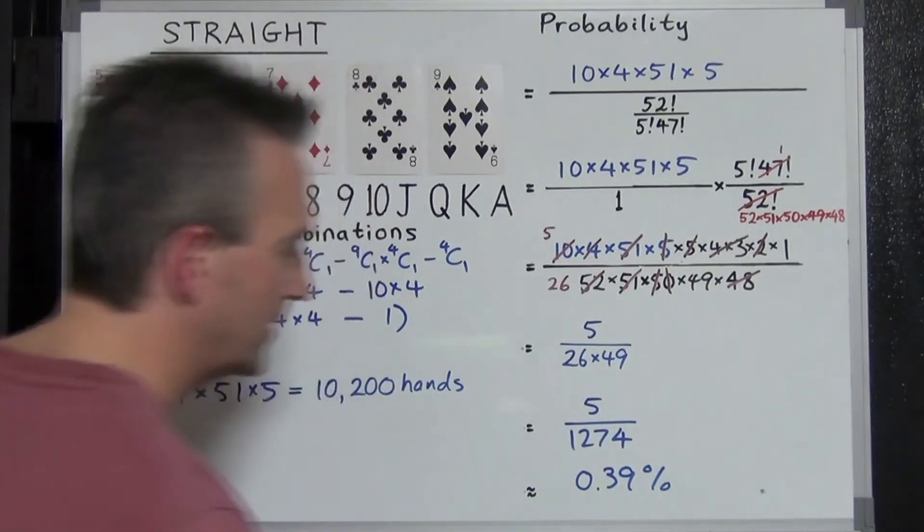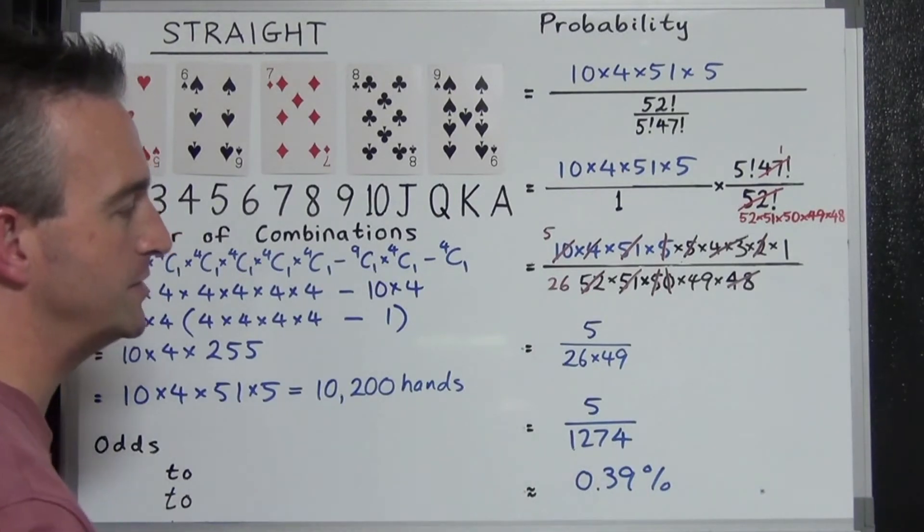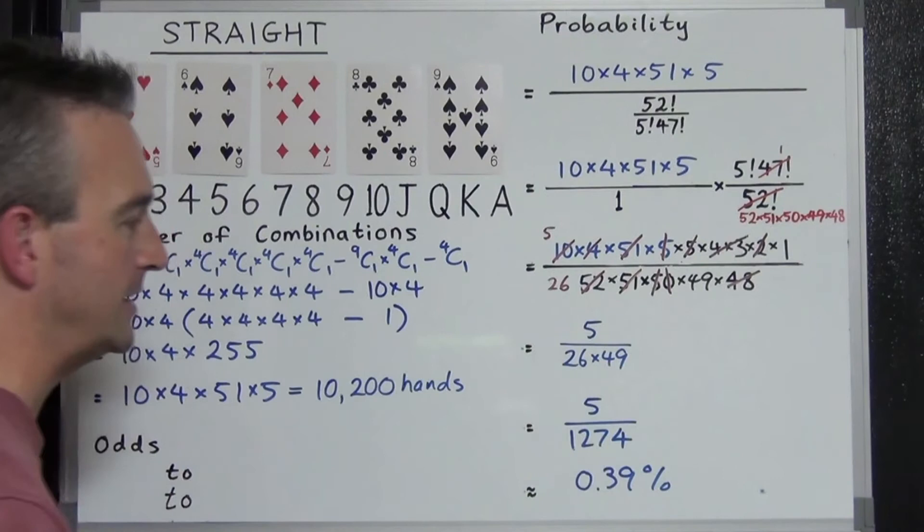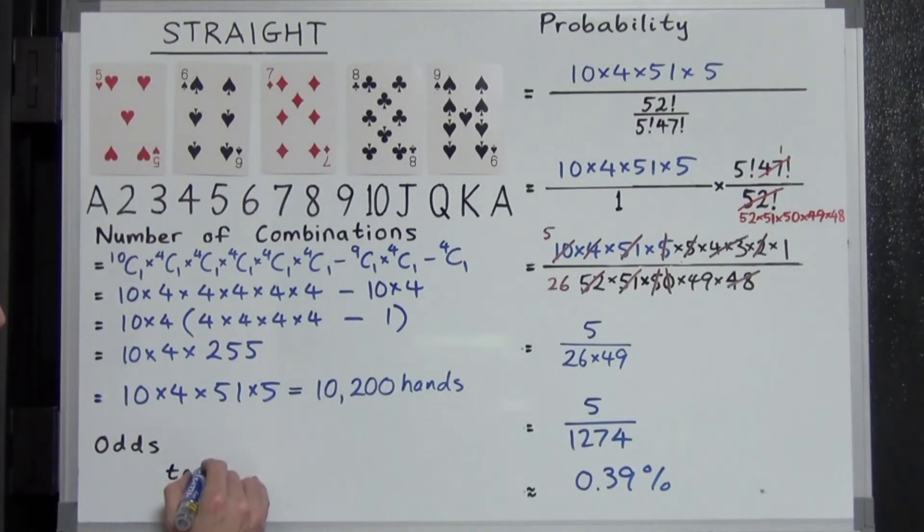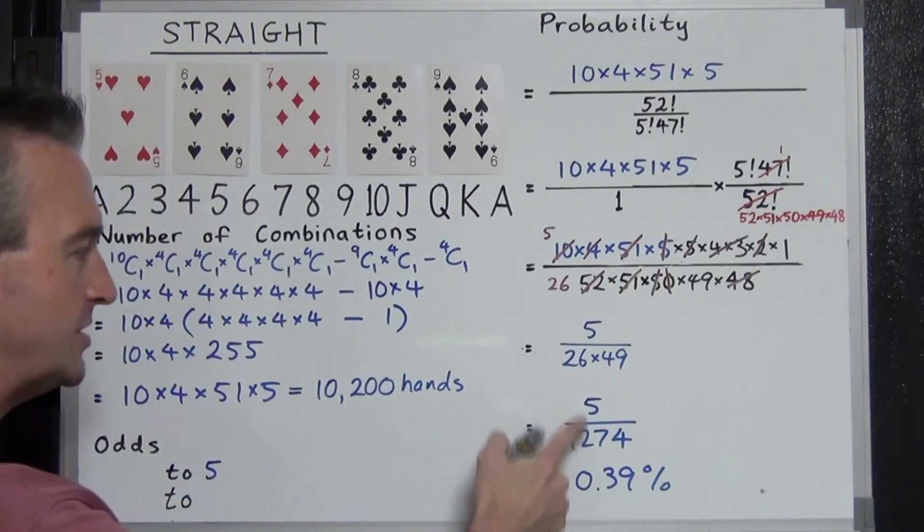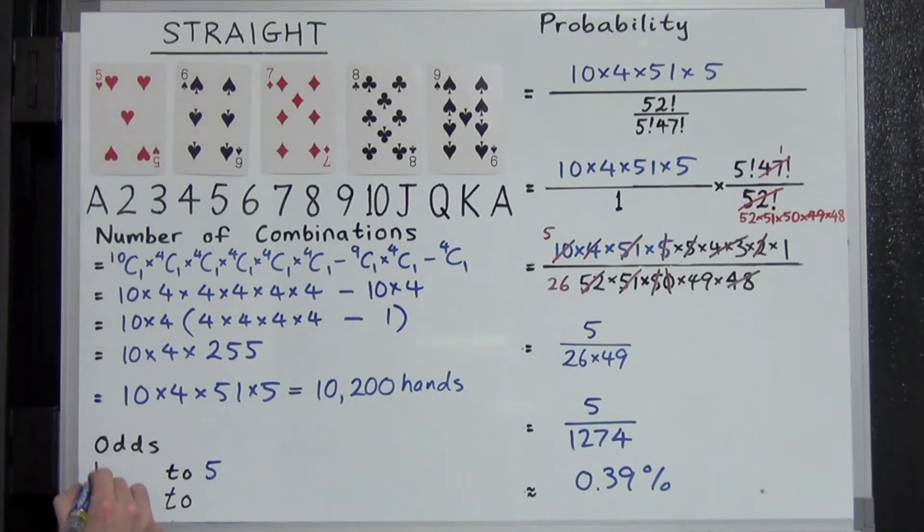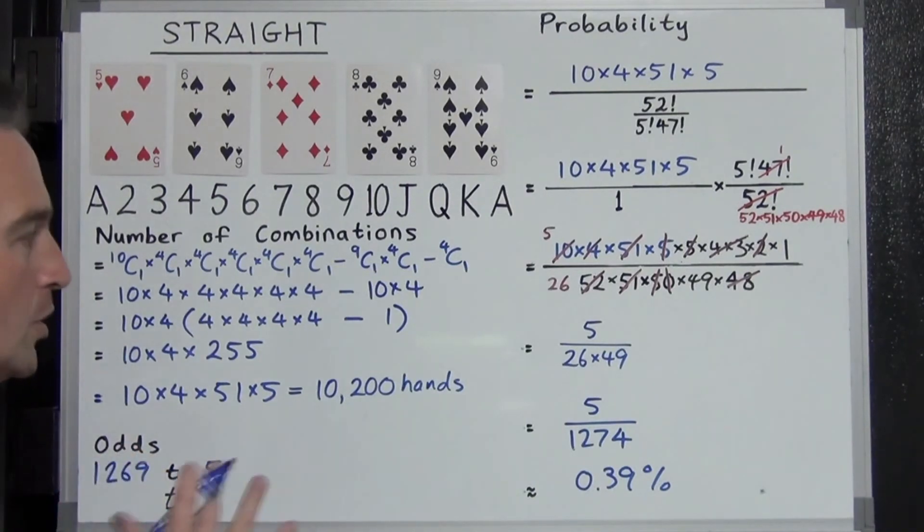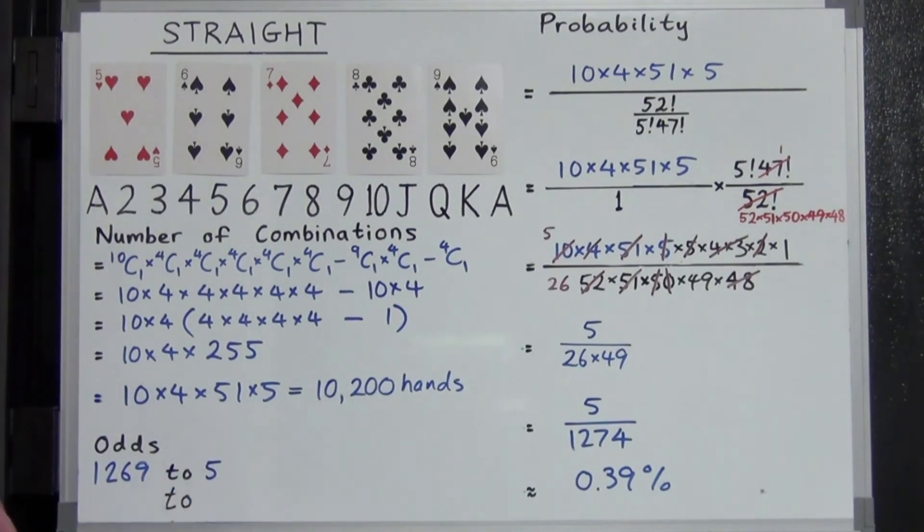Let's talk about the odds now. So for every 1,274 poker hands dealt, you could probably expect 5 straights. So for every 5 straights that you get, doing the subtraction here, you'd probably expect about 1,269 hands to not be straights. Dividing both of these by 5, you'll get 253.8 exactly to 1.